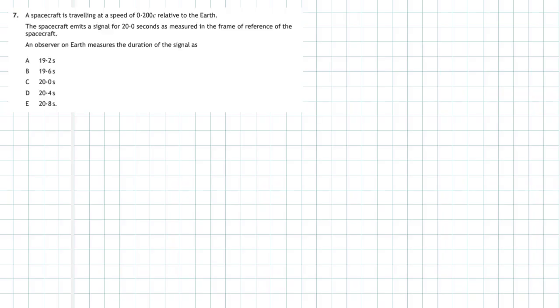Question 7 from section 1 of the 2018 Higher Physics paper. A spacecraft is traveling at a speed of 0.200c relative to the Earth, that's 0.2 times the speed of light. The spacecraft emits a signal for 20 seconds as measured in the frame of reference of the spacecraft. An observer on Earth measures the duration of the signal as...